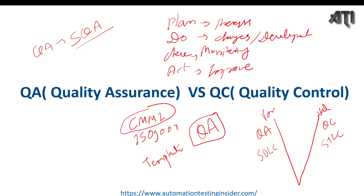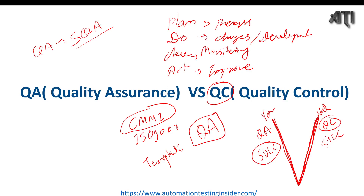Now let's talk about quality control. The other side of the V-model — which we'll discuss later — helps explain QA and QC. QC is a software engineering process to ensure quality in a product or service. It examines the end product once the product is developed. Quality assurance is part of the development phase, while quality control comes in once the product is done — it's the testing part. QC is handled by the software tester, with the help of the quality analyst.